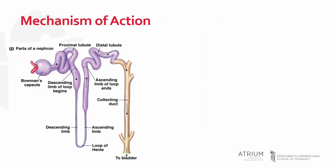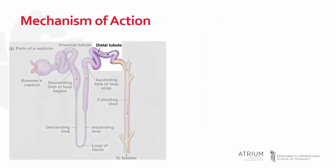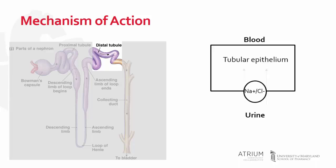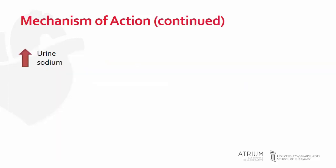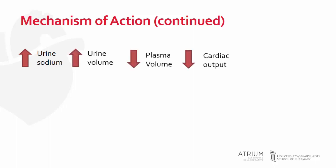Thiazide diuretics act in the distal tubule of the nephron. It is here that they inhibit sodium and chloride co-transport across the epithelium. Doing so increases sodium and chloride concentration in the latter parts of the nephron, which indirectly increases potassium excretion, increases urine volume, decreases plasma volume as well as cardiac output, and ultimately leads to a reduction in blood pressure.